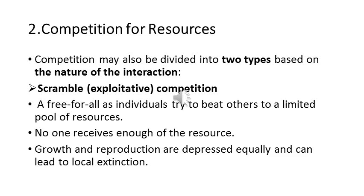Competition may also be divided into two types on the basis of the nature of interaction. The first is scramble or exploitative competition, where resources are so limited they cannot support all individuals. In this free-for-all condition, no one receives enough resources, so growth and reproduction are depressed equally and can lead to local extinction, because all individuals are deprived of resources and none has enough to survive and reproduce.